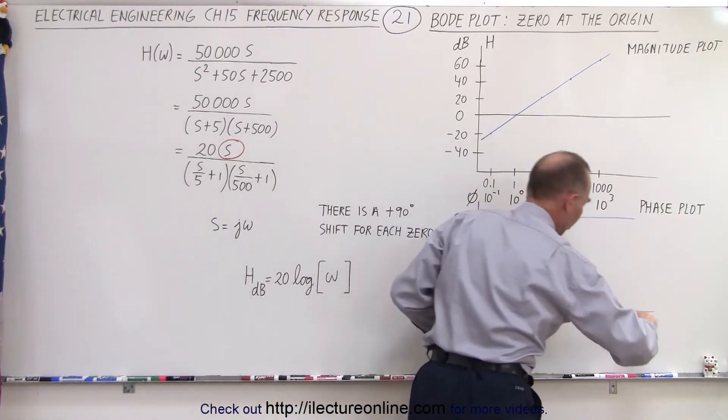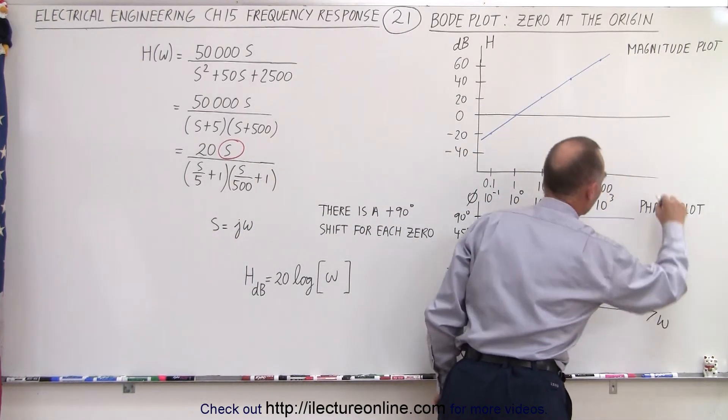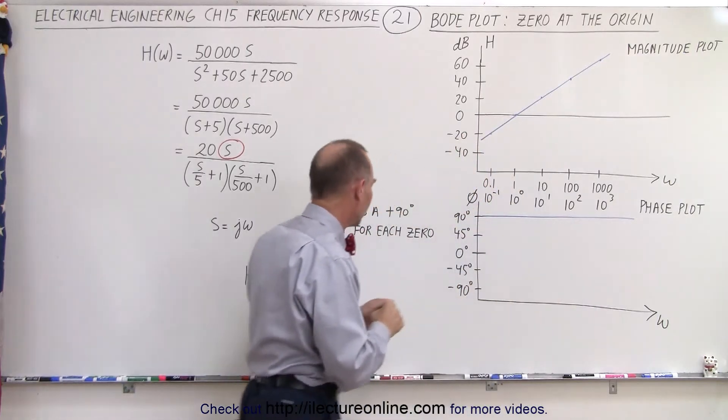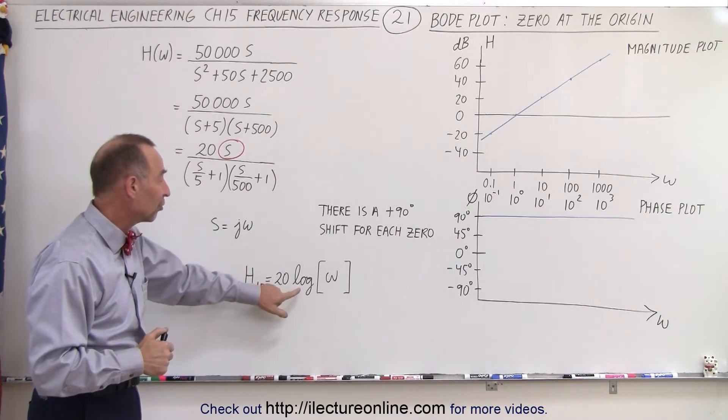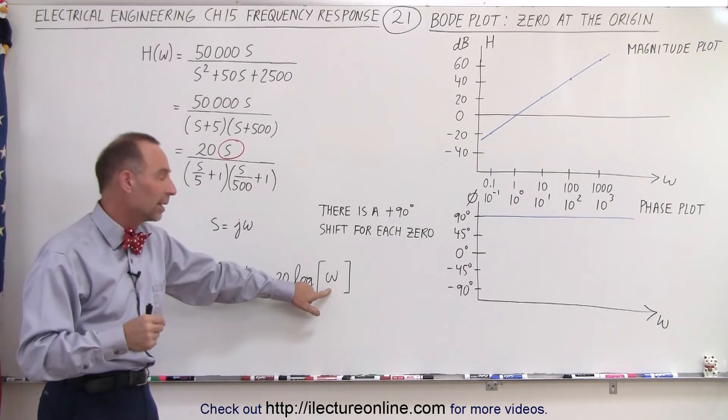Of course on the horizontal axis this represents omega. As far as the magnitude is concerned, notice the magnitude in dB is 20 times the log for the value of omega.